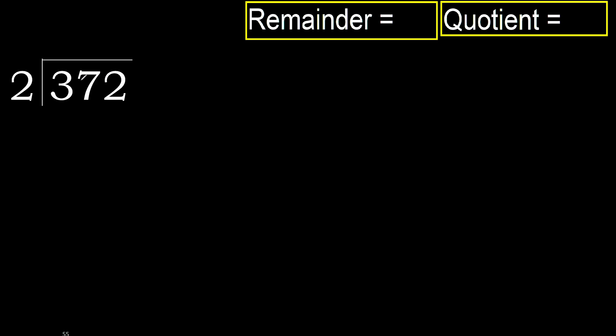372 divided by 2. 3 is not less, therefore with 3: 2 multiplied by which number is nearest to 3, but not greater?